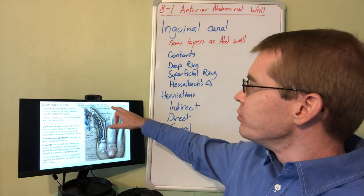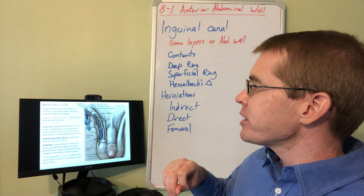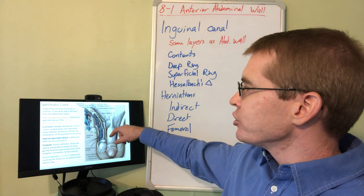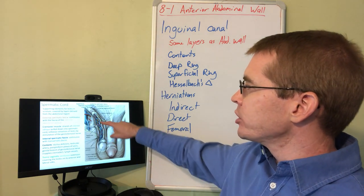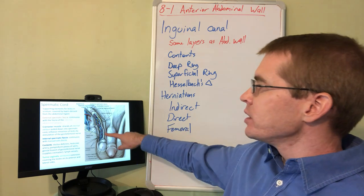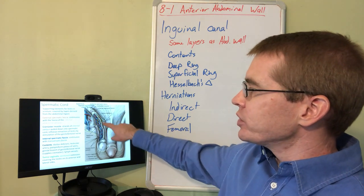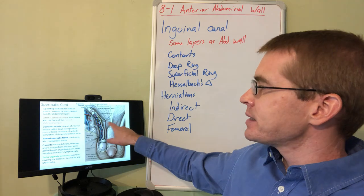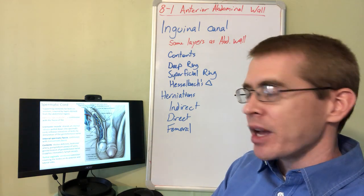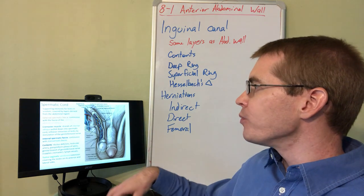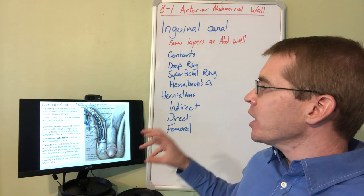Moving deep to the cremaster muscle, we have the internal spermatic fascia, labeled here. It is opened below this point, which allows you to see the contents inside the internal spermatic fascia and inside the spermatic cord as a whole. That internal spermatic fascia is derived from the transversalis fascia.